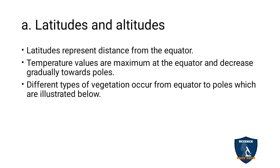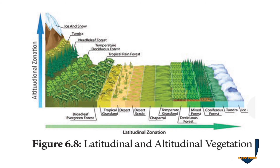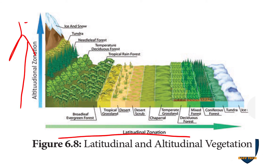First, latitude and altitudes. Latitude represents the distance from the equator — this we have seen in the climatic factors also. Latitudinal and altitudinal vegetation depends on height; latitudinally, it ranges from 0 degrees to the poles, that is from the equator to 90 degrees.